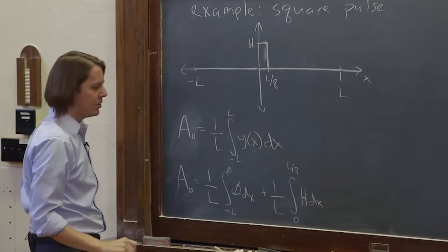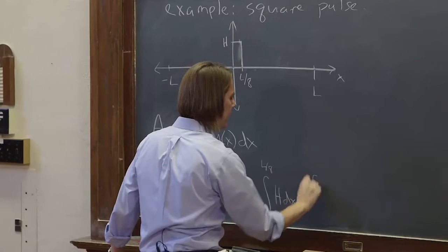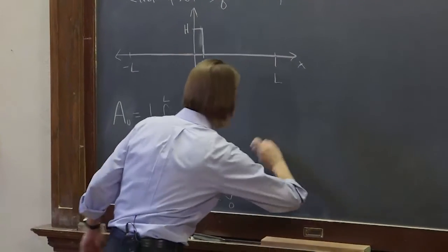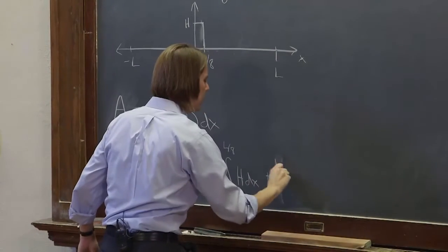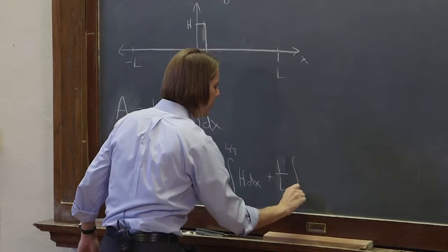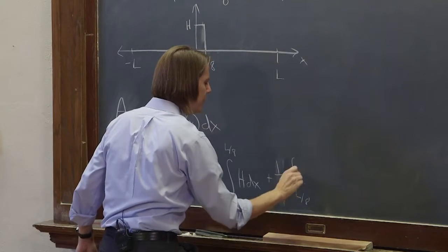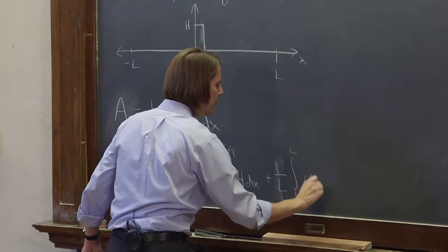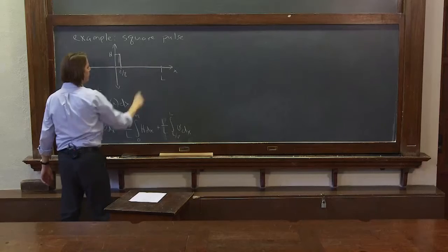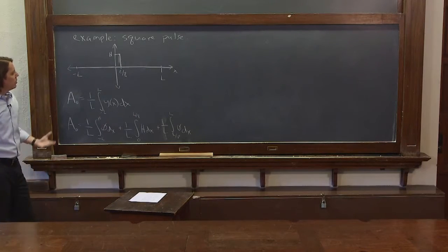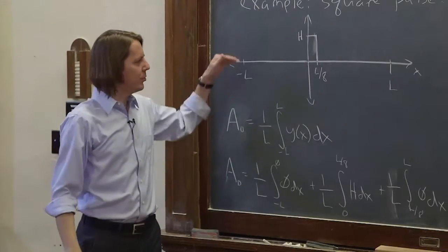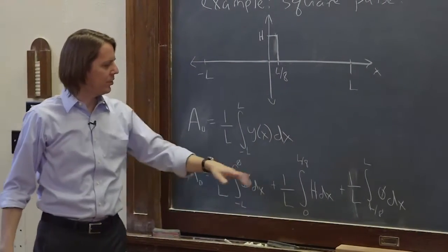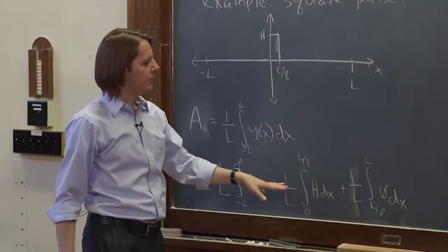That's not such a bad integral. And then the other part is the integral, this is 1 over l integral from l over 8 to l, again it's 0. So you can split it up that way. If you have a piecewise defined function, you can just split up your integral, make your life easier.